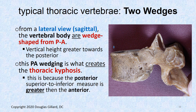The typical thoracic vertebra also has two wedges — probably should have put a star on that, it's a good test question. From a lateral view, you can see the demifacets nicely: there's an inferior demifacet, a superior demifacet, and the transverse costal facet. So inferior and superior costal demifacets, and a transverse costal facet.